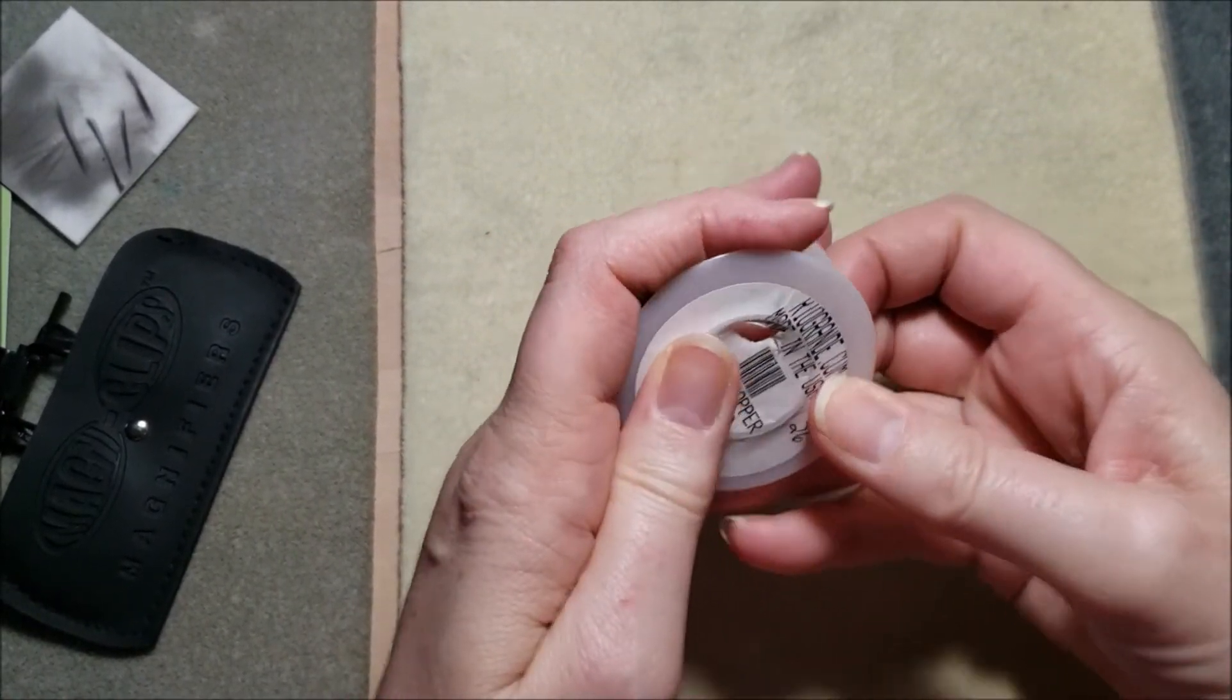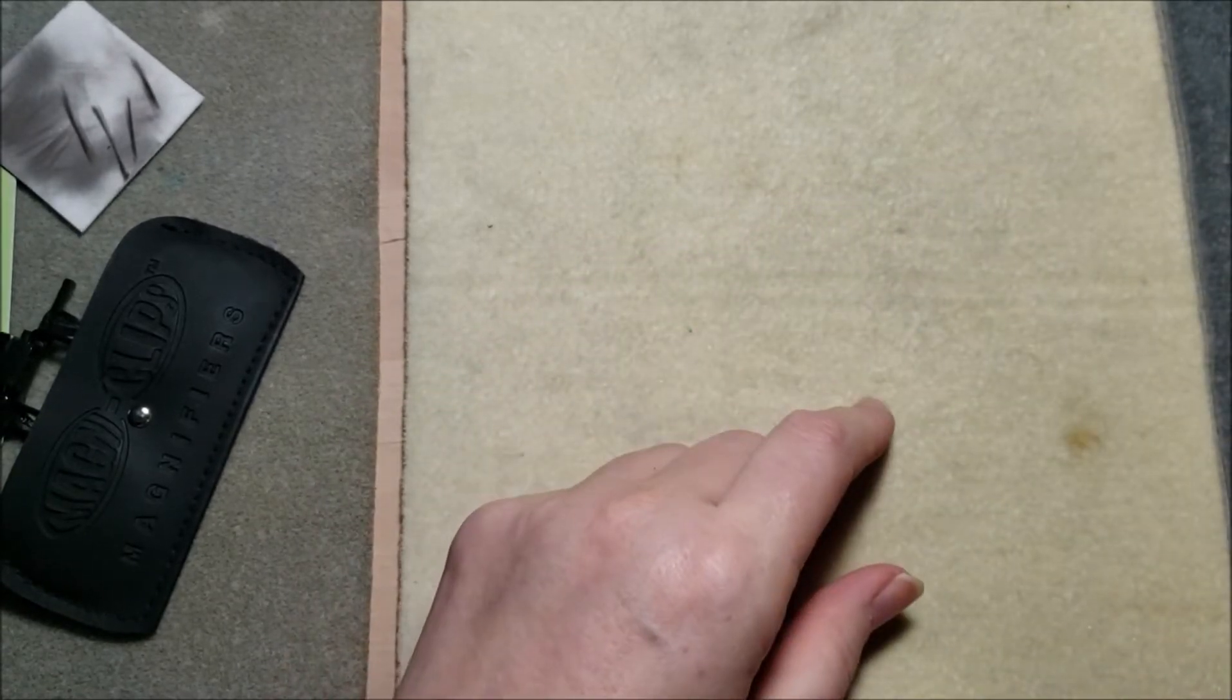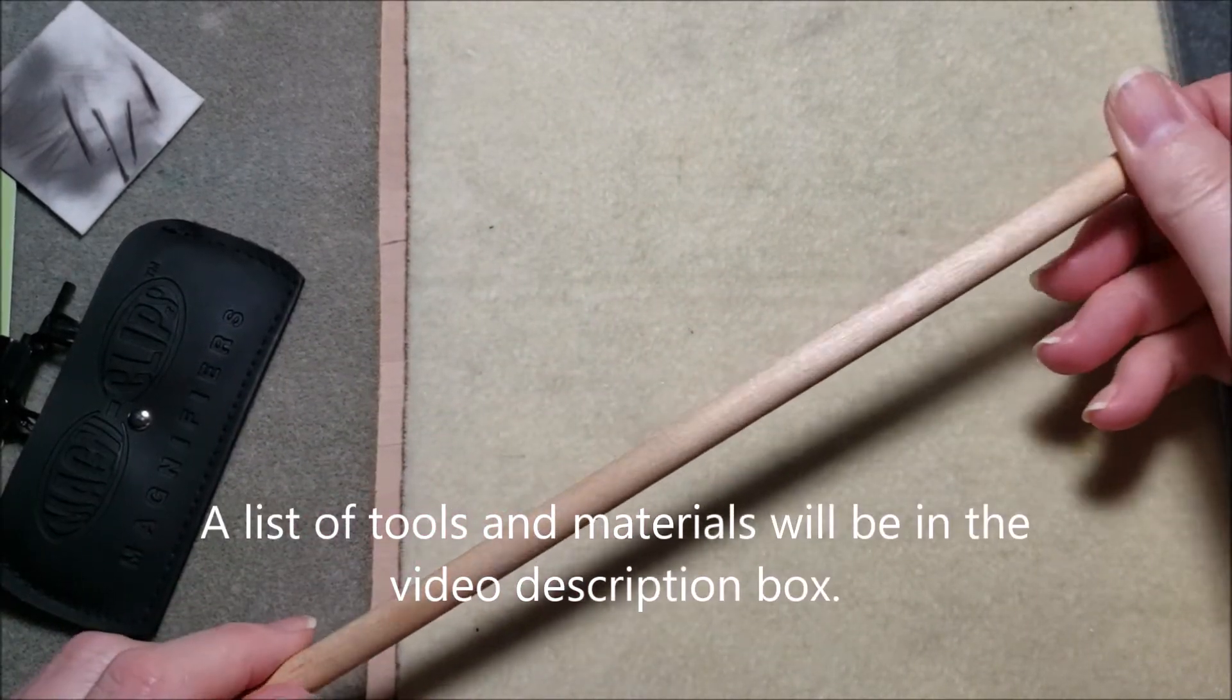So two gauges of wire, 20 for the support piece at the top, and 26 for the actual knitting. And of course, you're going to need a dowel.